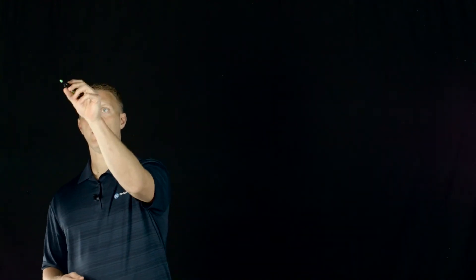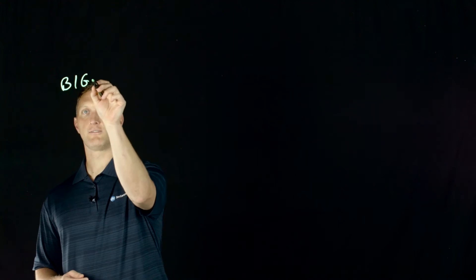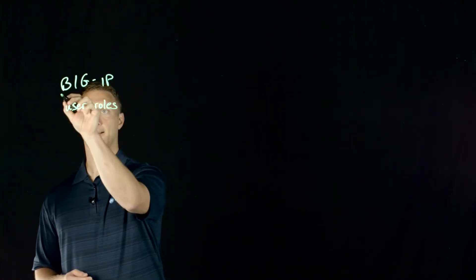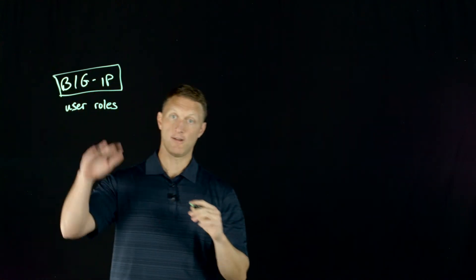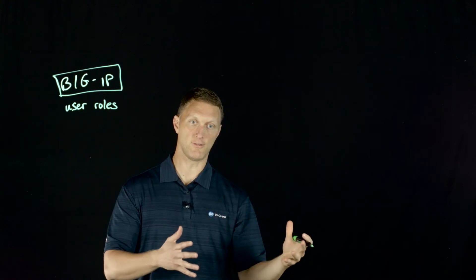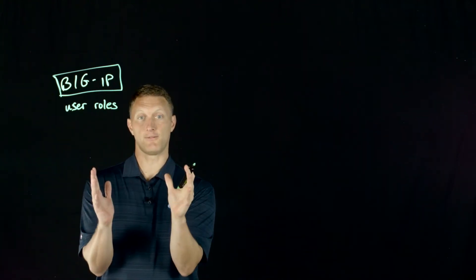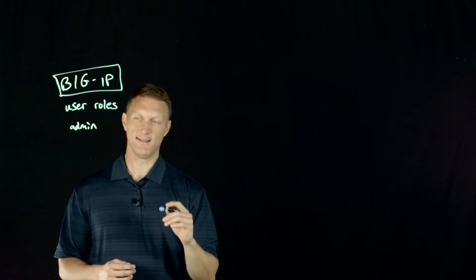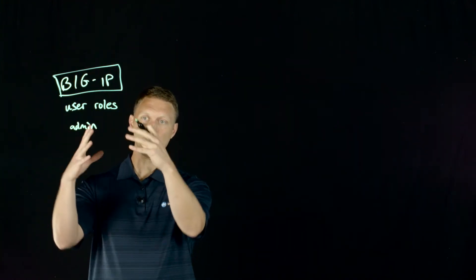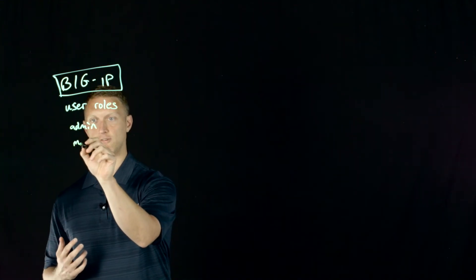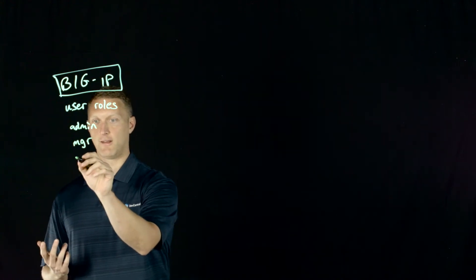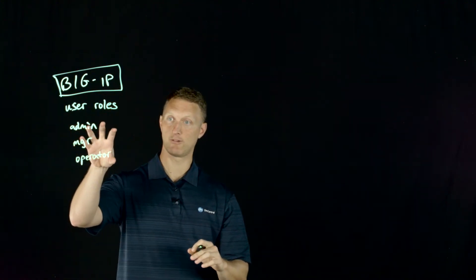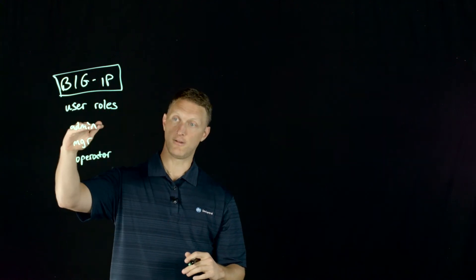So let me go through a few examples of the different user roles. You've got your BIG-IP over here — I'll draw a couple of things — and you can create user roles on the BIG-IP. There are several of them and we'll point to those in the details of this video. A couple I'll mention: you've got admin, which gives you complete access to everything on the box essentially. But you don't want everyone to have admin, so we break it down — we have things like manager, operator, and some others. This is not a complete list.